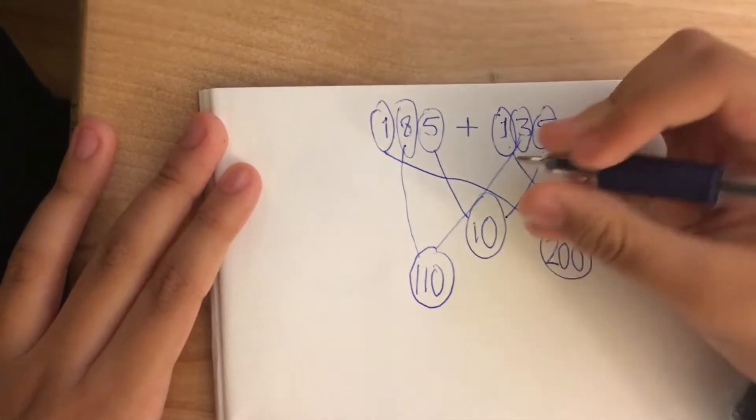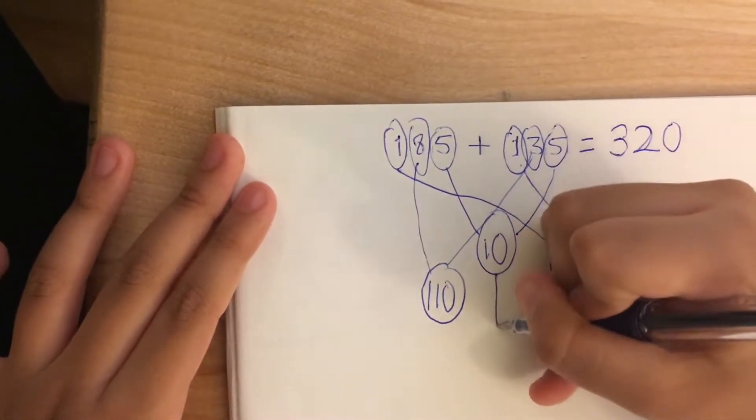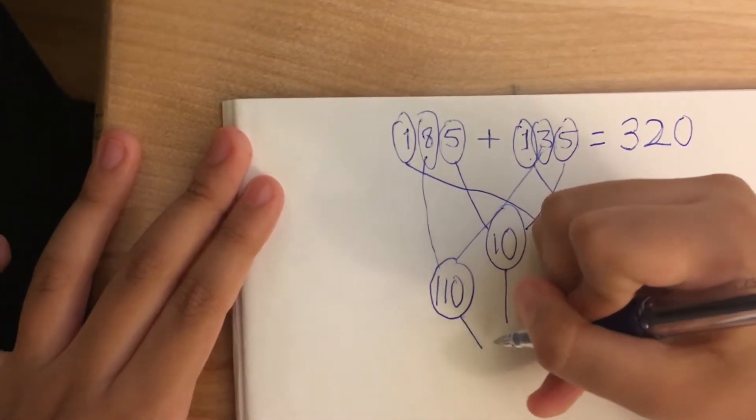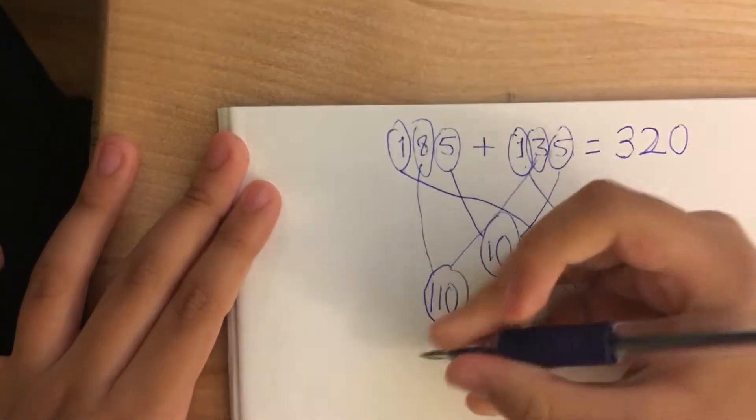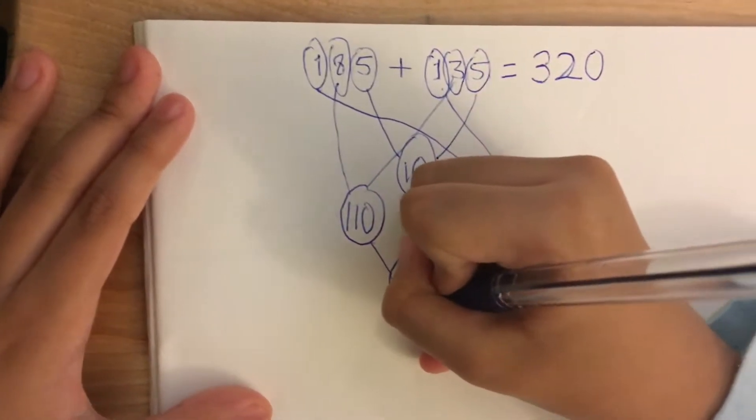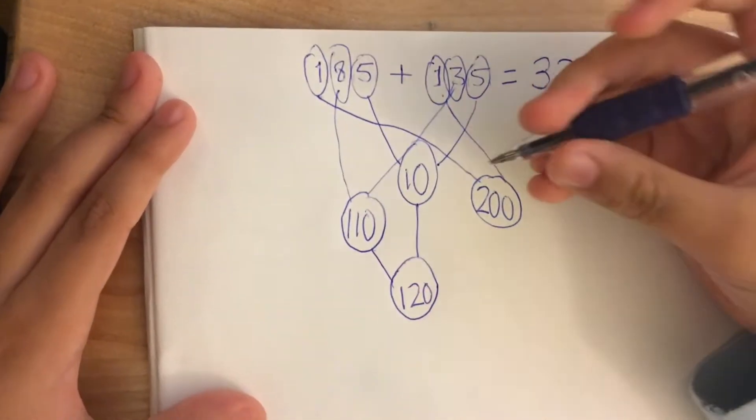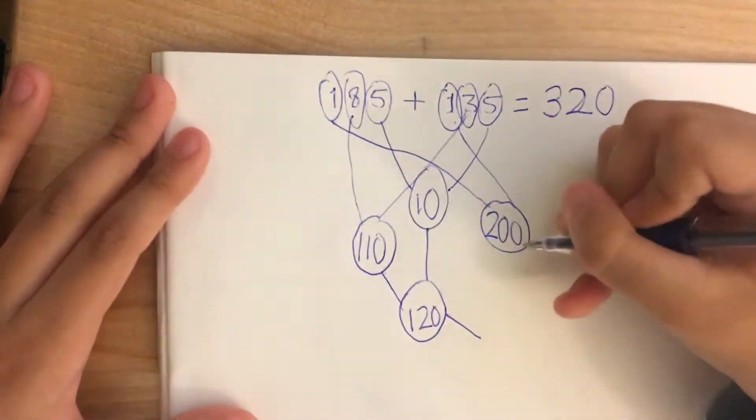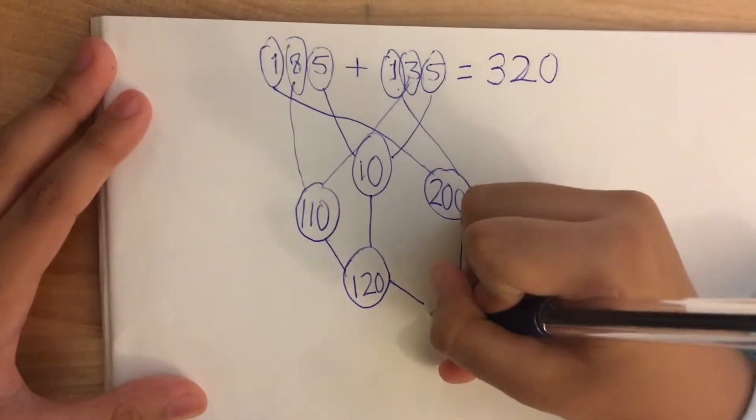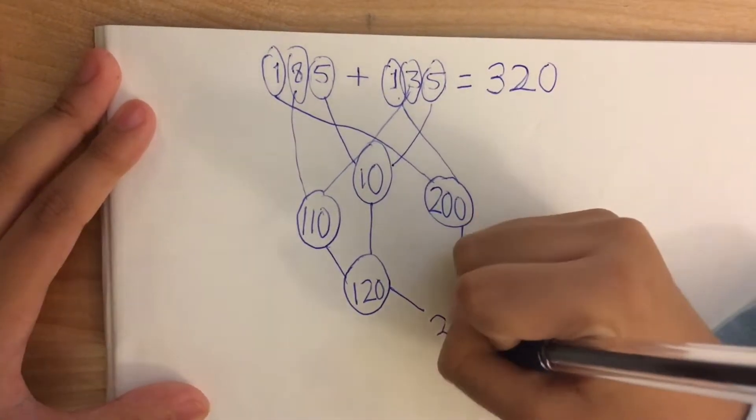And then you put 10 with 110, you get 120. Put 120 with 200 and you get 320.